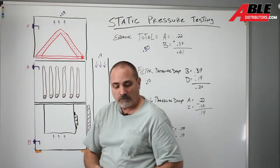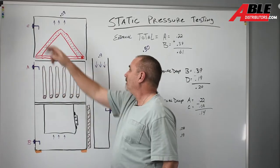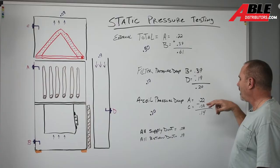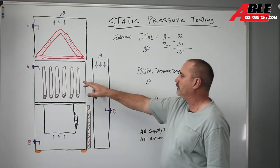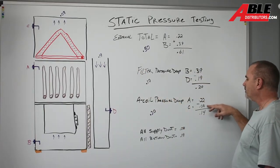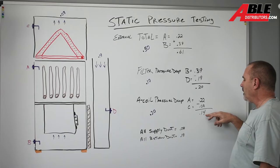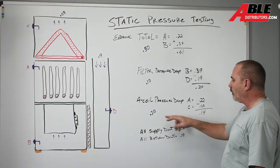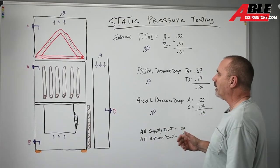We're going to take that minus that. So we've got 22 still here, and then on the top of the A coil is 0.08. So that means the A coil drop is 0.14. We allow for 0.20, so we're good there.